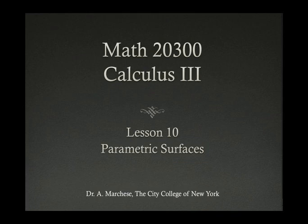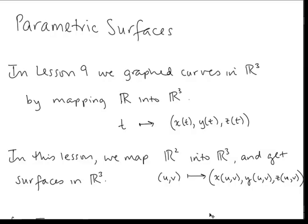This is Lesson 10 in our Calculus 3 series: Parametric Surfaces. In Lesson 9, we graphed curves in three-dimensional space by mapping the real line into three-dimensional space. So we took a t-value and from it defined an x of t, y of t, z of t — a point in three-dimensional space.